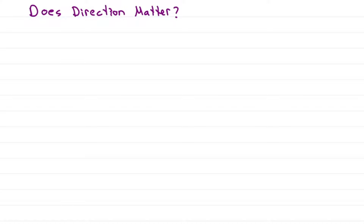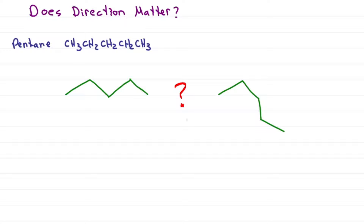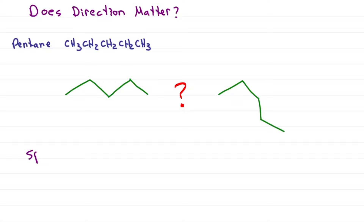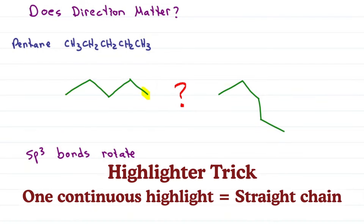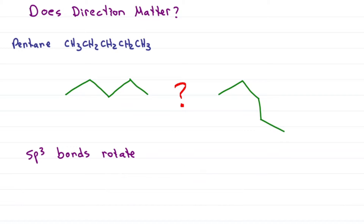Does it matter which way I draw the molecule? Which is the correct line structure for pentane? Actually, they're both correct. Since these carbons are sp3 hybridized with a single or sigma bond, they can rotate in space. Use the highlighter trick — as long as you can highlight from one end to the other without lifting your highlighter, you have a straight chain regardless of direction. Or just count: one, two, three, four, five.